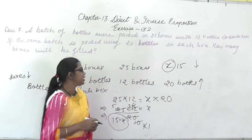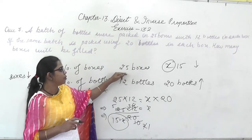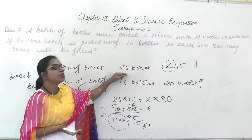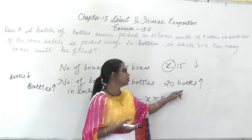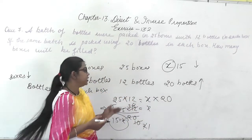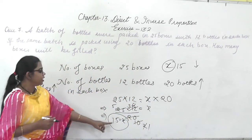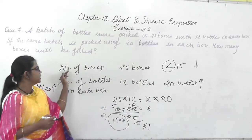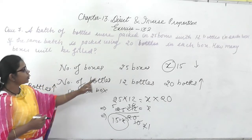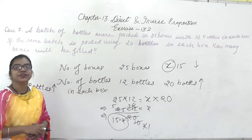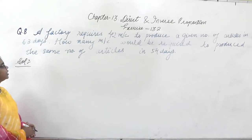So the number of boxes required is 15. From here you can see: when the number of bottles per box was less (12), the number of boxes was more (25). Now that we increased the number of bottles to 20, the number of boxes decreased to 15. This confirms the inverse proportion. This is question number 8.